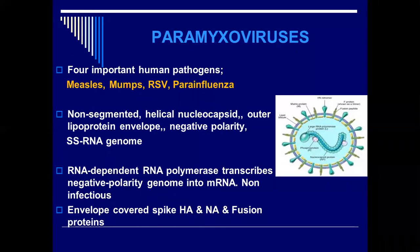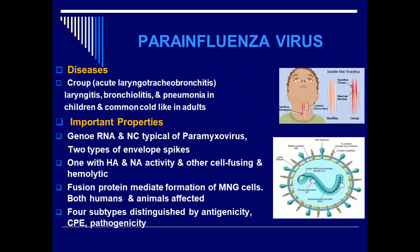Generally speaking, the viruses carry hemagglutinin and neuraminidase. But those viruses that cause giant cell formation always have the fusion protein that helps to fuse the cells together to make them larger.